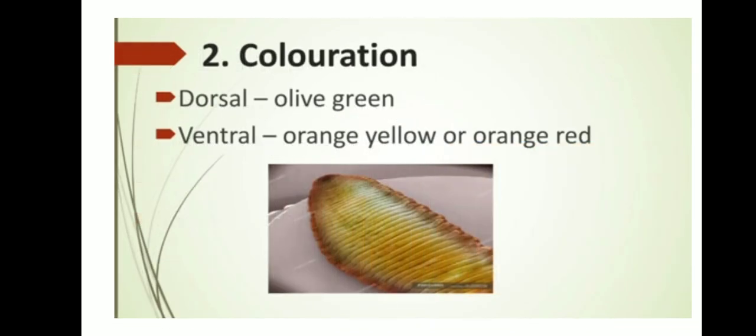Next, coloration. The dorsal side of this leech is olive green, and the ventral surface is orange-yellow or orange-red in color. Dorsal means the upper side or back of the animal, and ventral means the underside — the lower side. So the upper side is olive green in color.